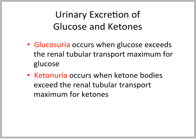Glucosuria occurs when glucose exceeds the renal tubular transport maximum for glucose. Similarly, ketonuria occurs when ketone bodies exceed the renal tubular transport maximum for ketones.